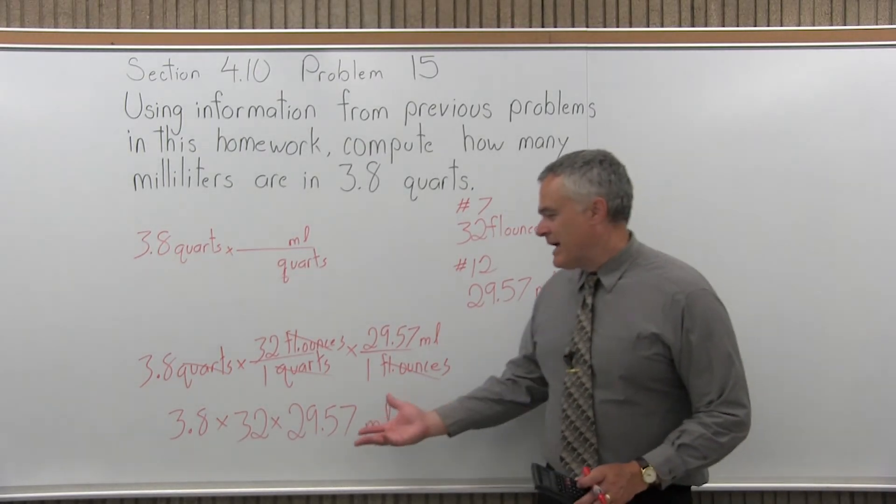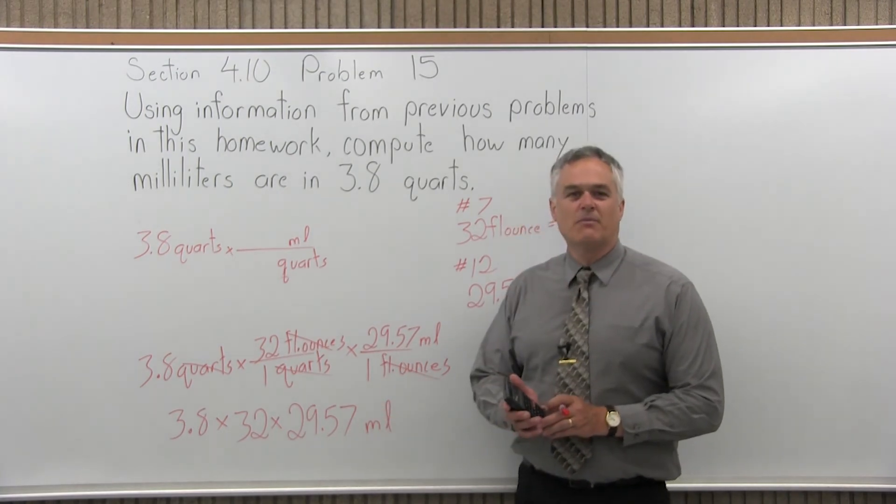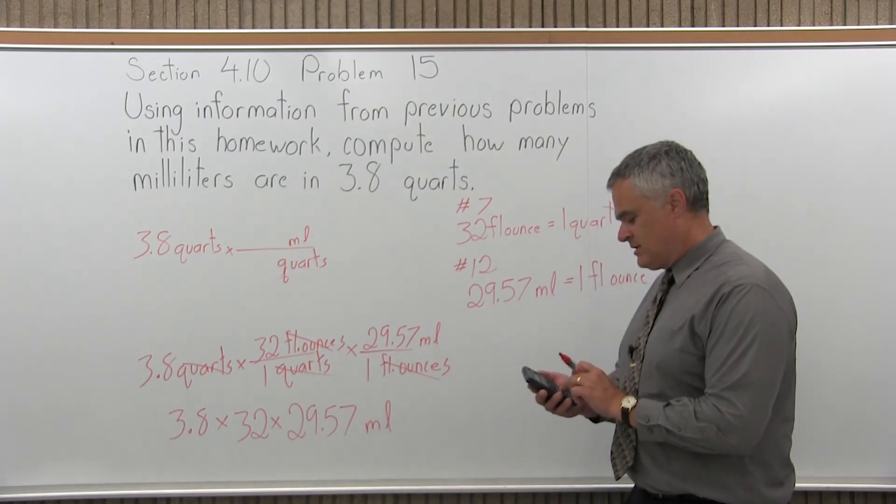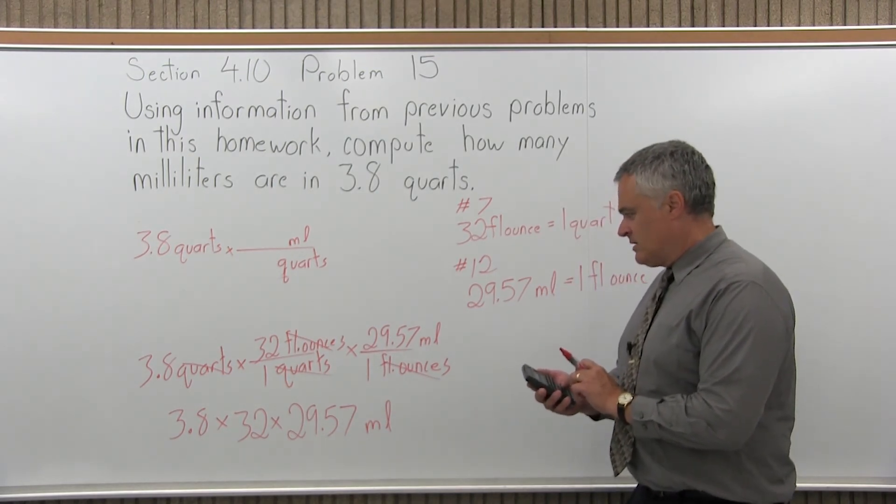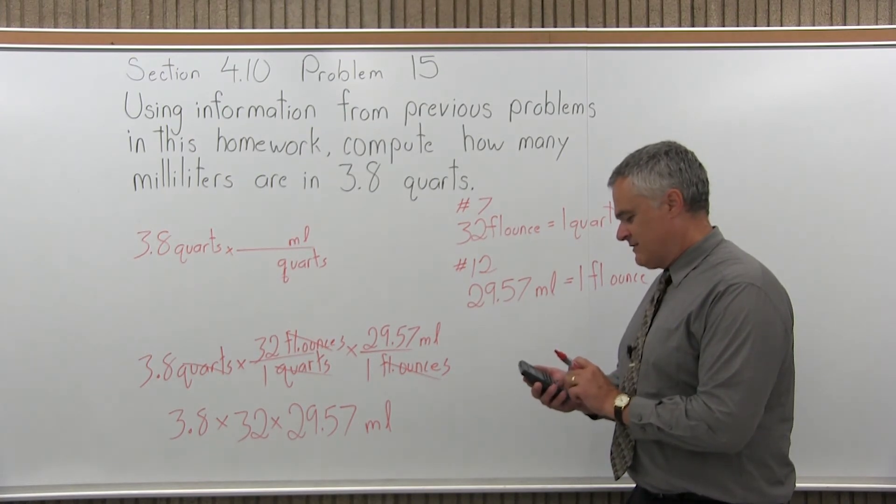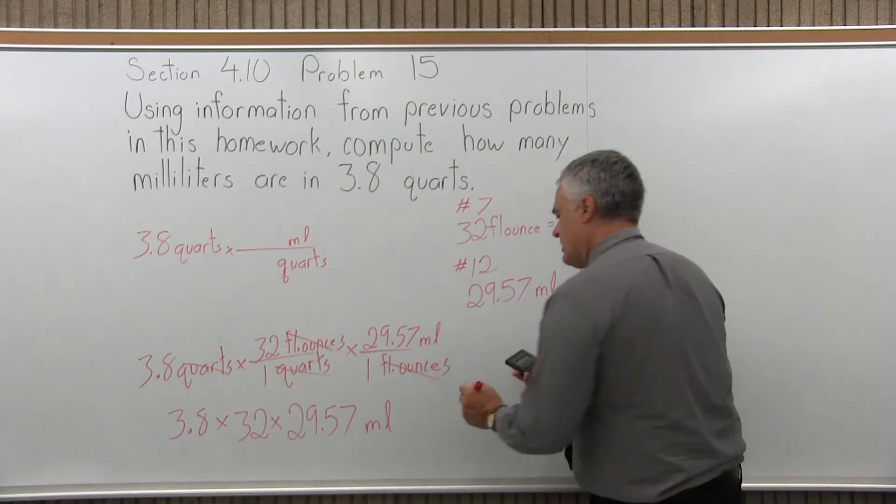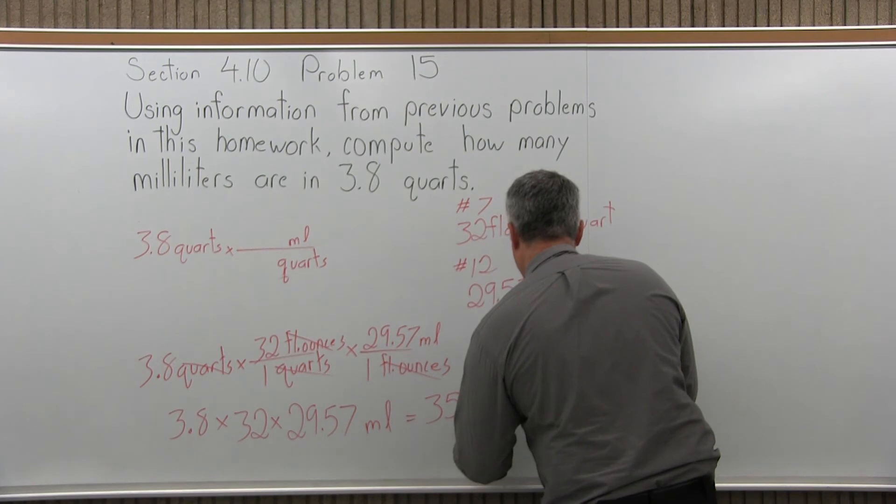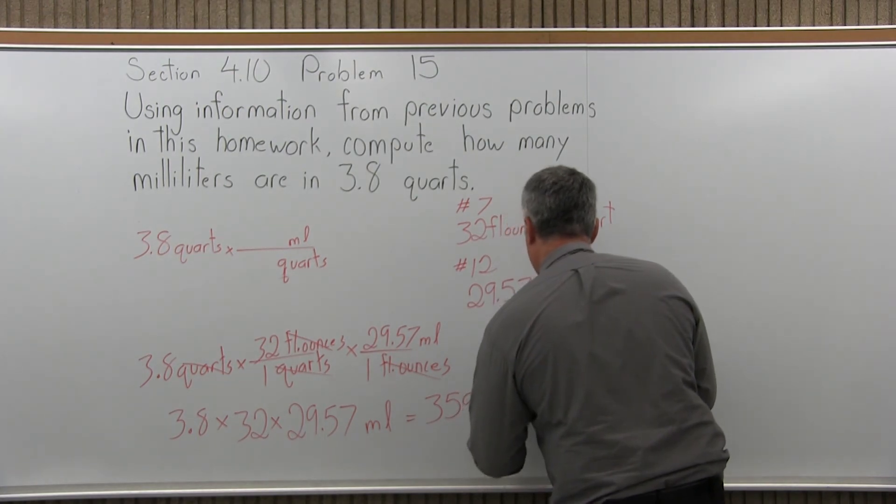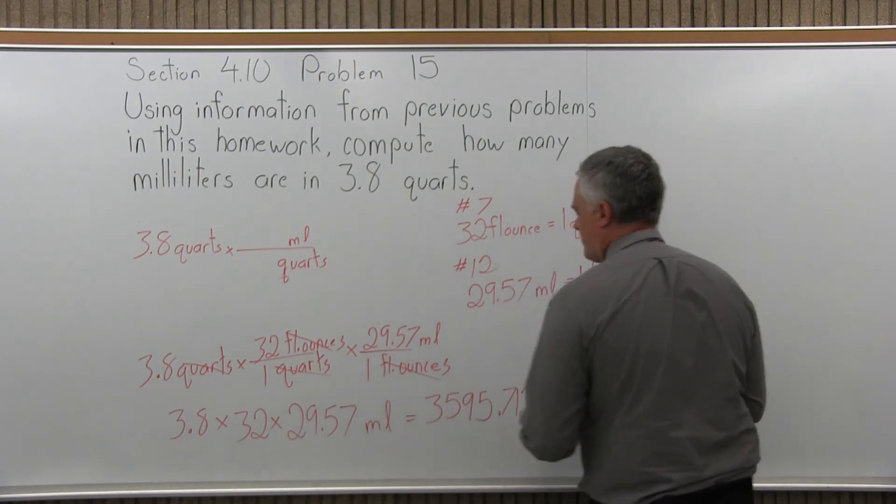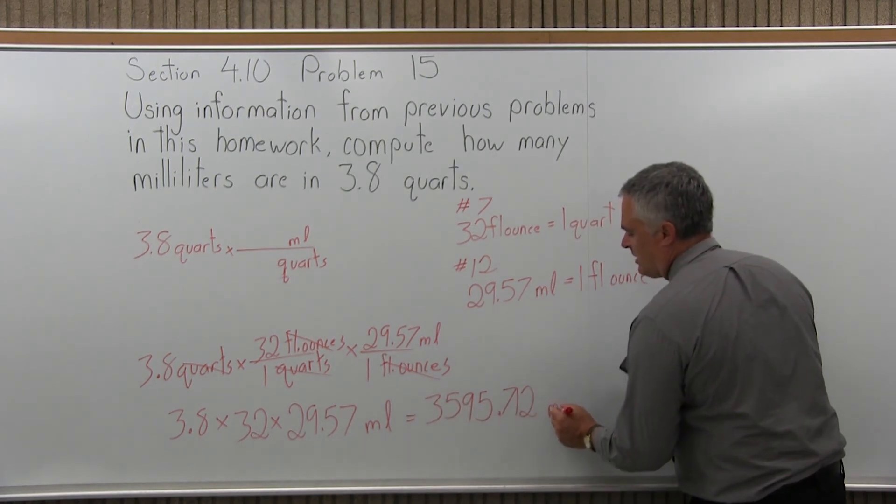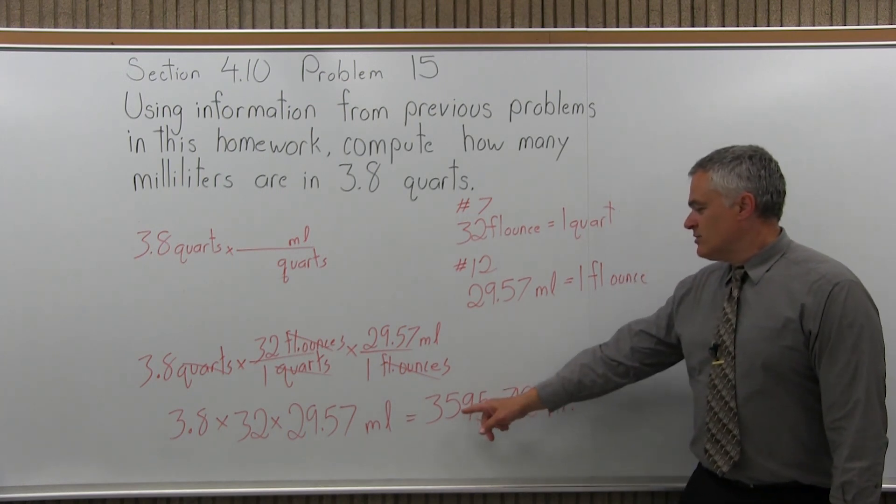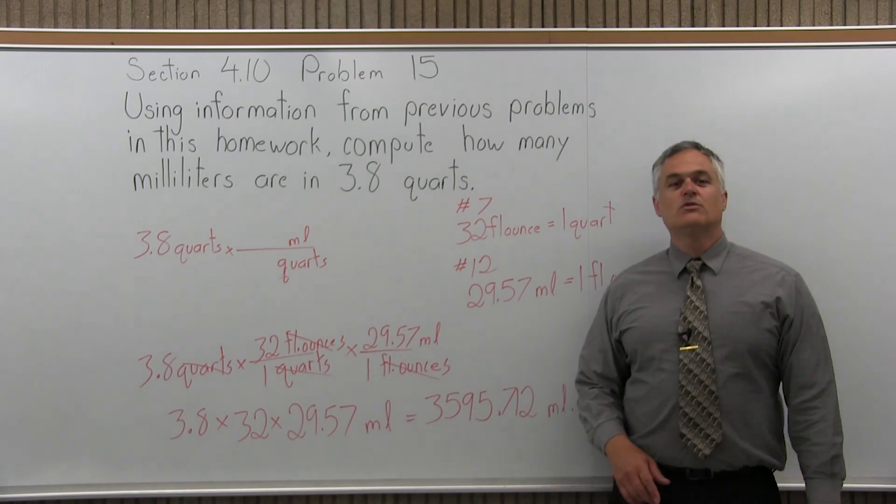That's a little beyond my ability to do in my head, and it would be very tedious to do out by hand. It could certainly be done, but with a calculator, it would be a piece of cake. So I'll put in 3.8 times 32 times 29.57 equals. So the answer I get comes out to 3595.712. So that's 3,595.712 and my units of measure are milliliters. So 3.8 quarts is equivalent to 3595.712 milliliters.